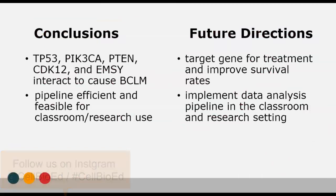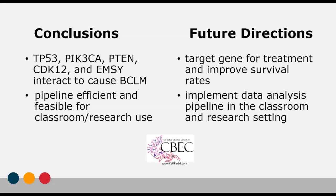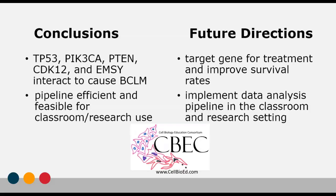Based on this data analysis, it can be concluded that TP53, PIK3CA, P10, CDK12, and MZ do interact to contribute to breast cancer liver metastasis. Additionally, this pipeline is efficient and feasible for classroom research use, as the portal is free and available to the public. For future directions, we would look into targeting a gene to examine its effect on the interaction pathway, potentially using this in therapy to improve survival rates. This pipeline will also be implemented in the classroom for the identification of other genes for future research.